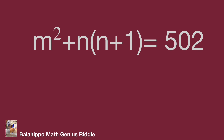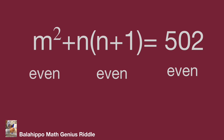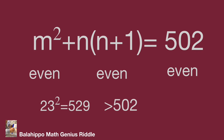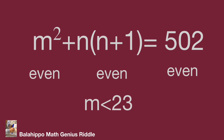The number 502 is an even number, and n times (n plus 1) is also even, so m squared must be an even number. Next, let's narrow down the scope of m. We find that 23 squared equals 529, which is larger than 502. So m must be less than 23, and m is an even number.